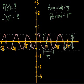f of 0 is equal to 0. What does that tell us? Is this a sine or a cosine function? Well, what's cosine of 0? Well, cosine of 0 is 1. And what's sine of 0? Well, sine of 0 is 0. And this function is 0. So we know that this is a sine function.